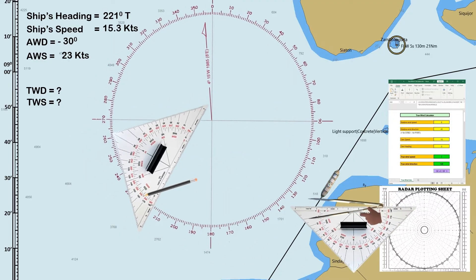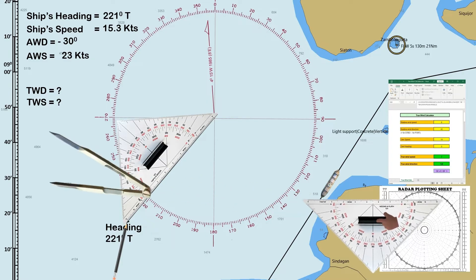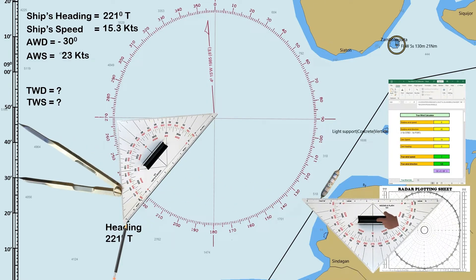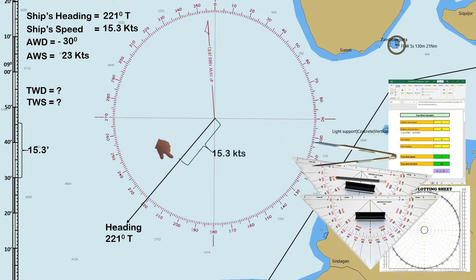First, lay down the own ship's course in the compass rose. The ship's heading is 221 degrees true. You can use a ruler, a triangle, or a parallel ruler. Once the ship's heading is laid down, use the compass divider to measure the ship's speed on the latitude scale. The ship's speed is 15.3 knots, which is equal to 15.3 miles on the latitude scale. Lay down the ship's speed along the ship's course, measured from the center of the compass rose, then mark it.